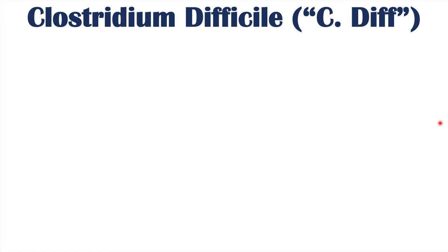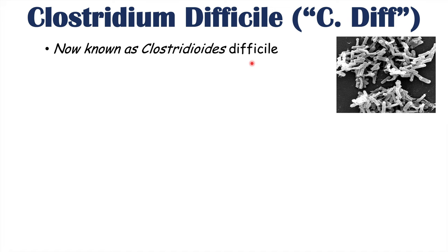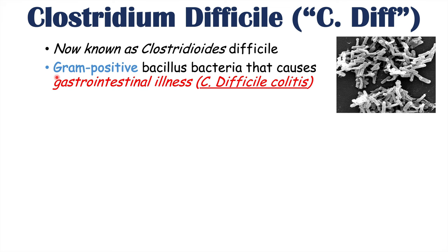Clostridium difficile or C. diff is now known as Clostridioides difficile — this is the newer term. From now on we will refer to this bacteria as C. diff. It is a gram-positive bacillus bacteria that causes gastrointestinal illness, often termed C. difficile infection or C. difficile colitis — colitis being inflammation of the colon. This bacteria is spore-forming and anaerobic.